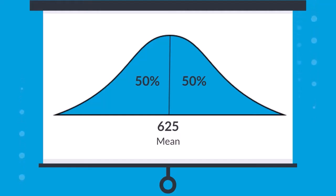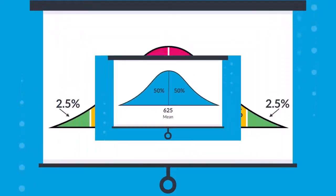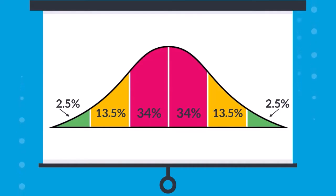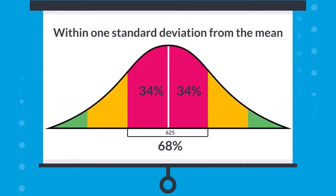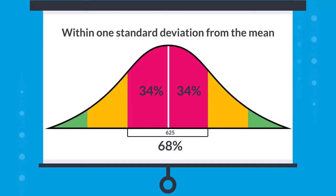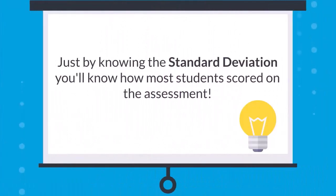The neat thing about a standard deviation is that, when data are normally distributed, like they are here, about two-thirds of the data, or 68% of the data, are within one standard deviation from the mean. Which means that, just by knowing the standard deviation, you also know how most students scored on their assessment.